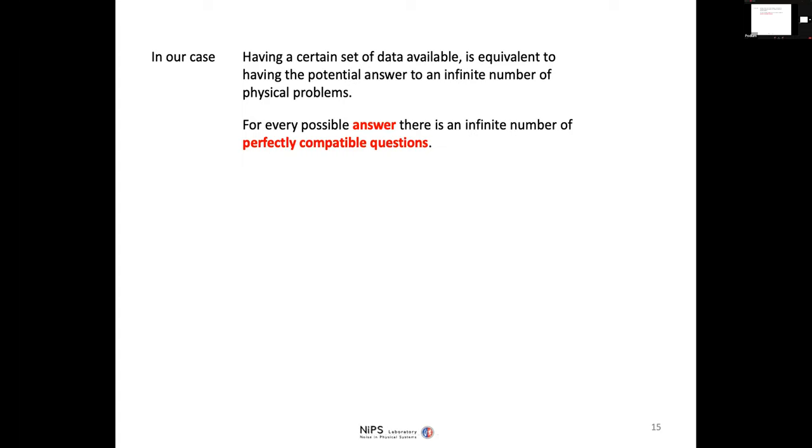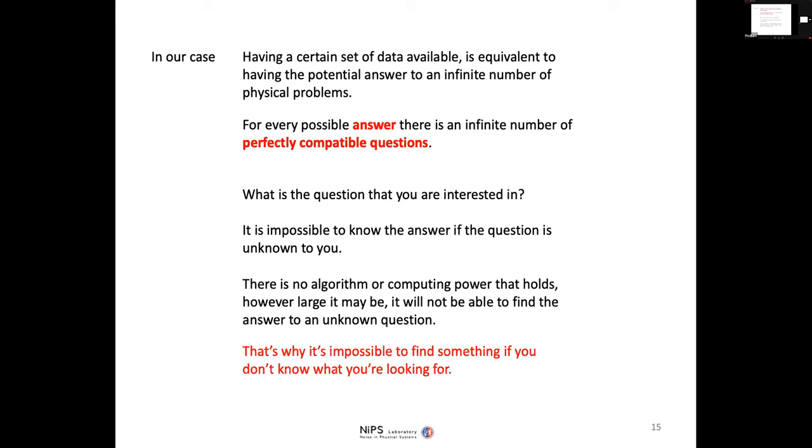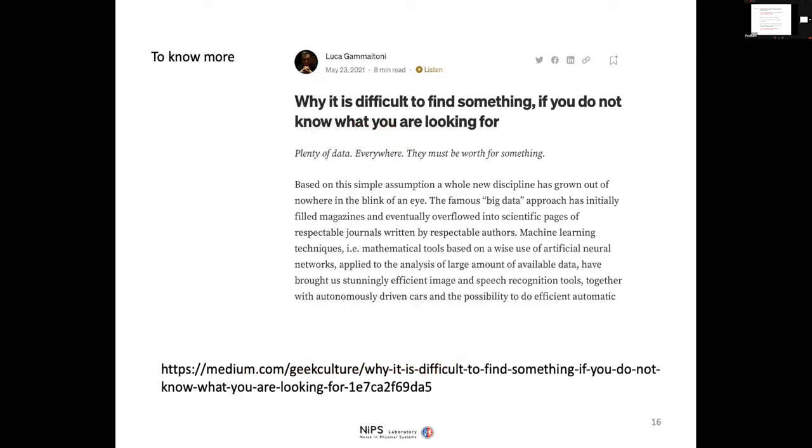Okay, so in our case, having a certain set of data available is equivalent to having the potential answer to an infinite number of physical problems. That's the problem that LIGO and VIRGO will have. They have the data, but they do not have the questions. So the data are the answer to a possibly infinite number of questions. For every possible answer, there is an infinite number of perfectly compatible questions. What is the question that you are interested in? It's impossible to know the answer if the question is unknown to you. That's the sad truth. So there is no algorithm, no machine learning, no artificial intelligence, no computing power that holds. However large it may be, you will not be able to find the answer to unknown questions. That's why it's impossible to find something if you don't know what you're looking for.